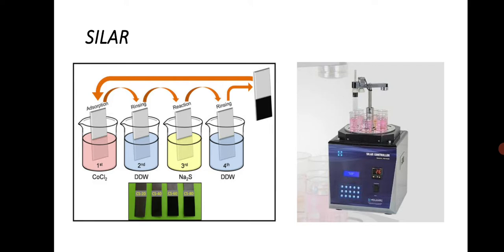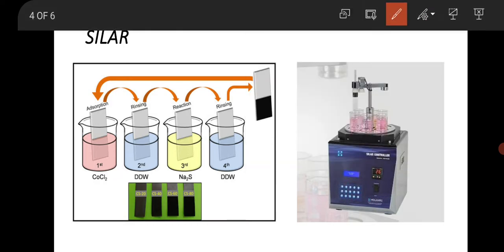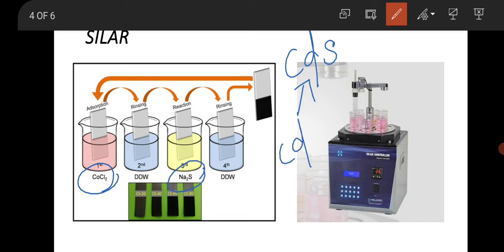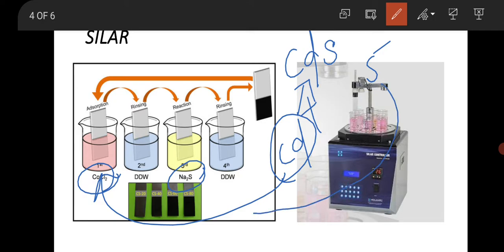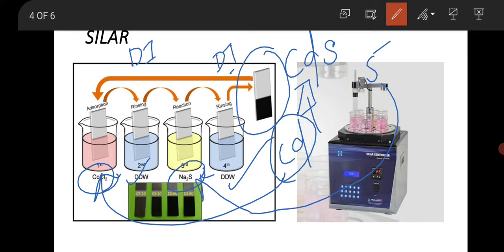The second technique is SILAR — Successive Ion Layer Adsorption and Reaction. From the figure you can see four different precursors are taken. In this example, cobalt chloride and sodium sulfide are used as specific precursors. Suppose you want to fabricate a thin film of CdS — cadmium sulfide — you need a cadmium source and a sulfur source. You take the cadmium-containing precursor in one beaker and the sulfur-containing precursor in another beaker. Two beakers contain DI water — deionized water — for rinsing. Initially the substrate is just a glass piece before deposition.